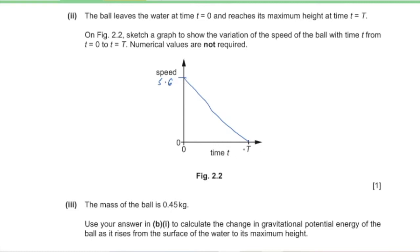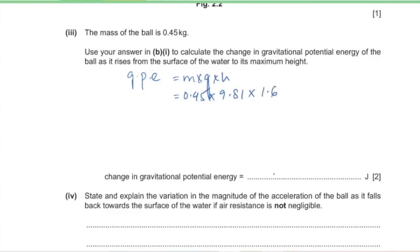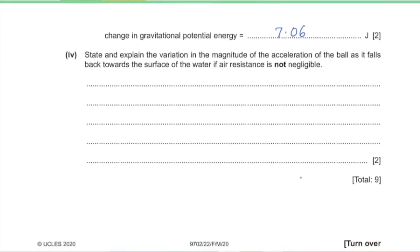Part 3: the mass of the ball is 0.45 kg. Use your answer from B1 to calculate the change in gravitational potential energy as the ball rises from the water surface to maximum height. Gain in GPE = mgh = 0.45 × 9.81 × 1.6 = 7.06 joules.